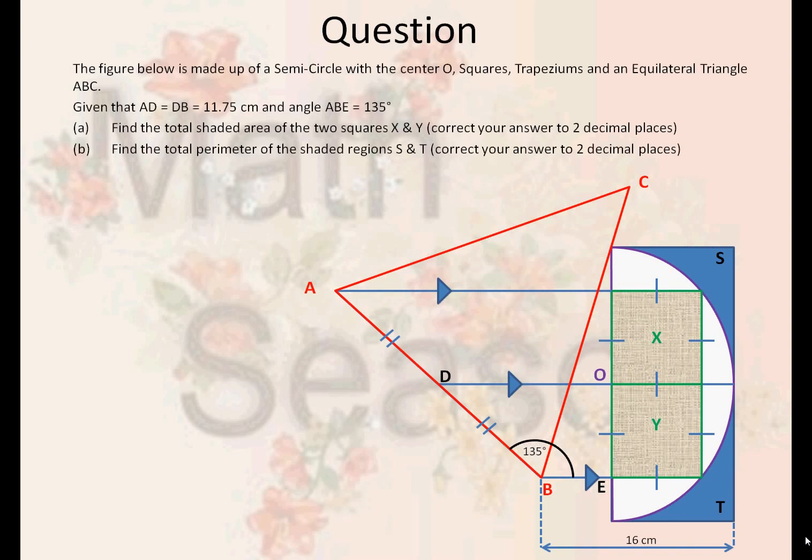The figure below is made up of a semi-circle with center O, squares X and Y, trapeziums, and an equilateral triangle ABC. Given that AD equals DB, 11.75 cm each, and angle ABE is equal to 135 degrees.